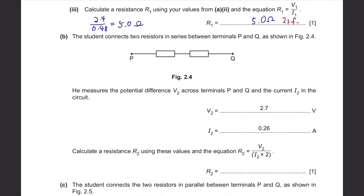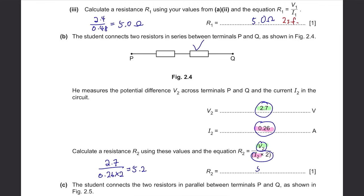Part B: the student connects two resistors in series between terminals P and Q. V2 is 2.7 Volts and I2 is 0.26 Amps after the resistor was added. Calculate R2 using R2 equals V2 divided by I2 times 2: that gives 5.19, which rounds to 5.2 ohms to 2 significant figures. Never forget your units.